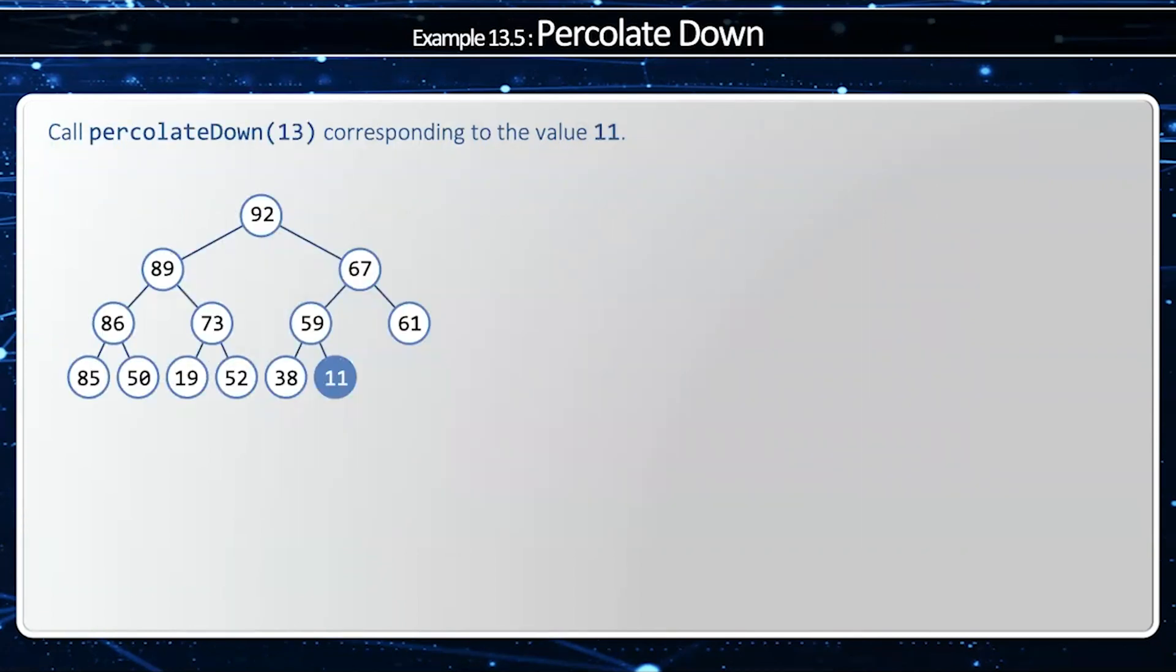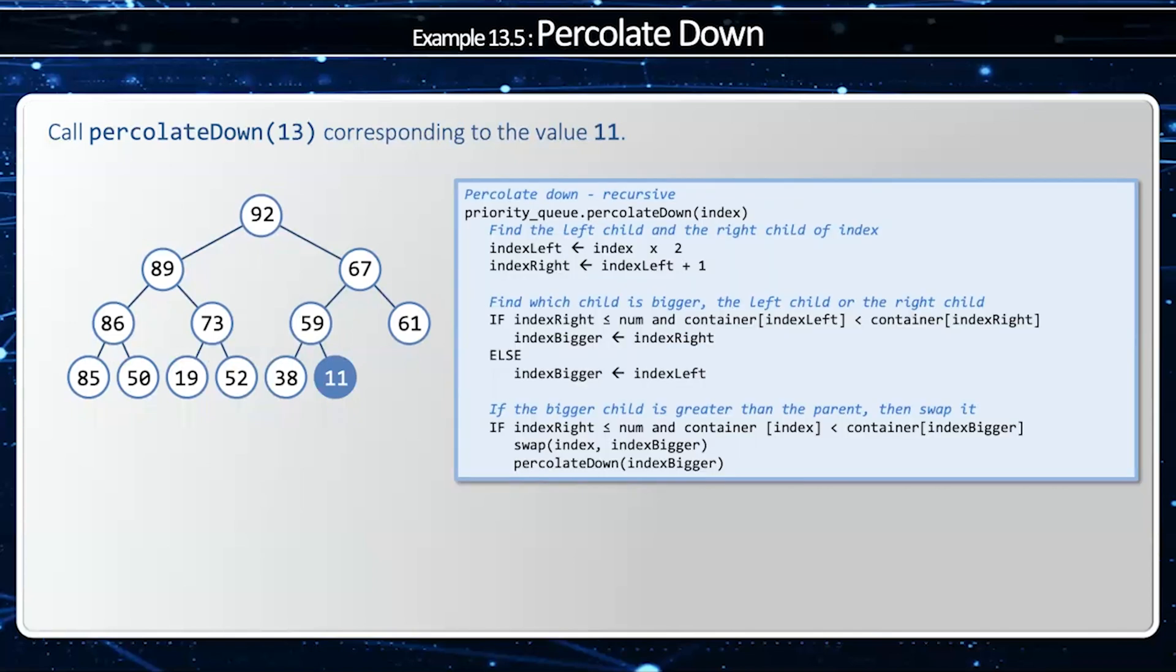Okay, to see how this works, take a look at this heap. Now, I want to call percolate down at index 13. To just remind myself what the algorithm is, I'm going to have my percolate down method to the right here. Now, index 13 corresponds to value 11. And to remind myself of that, I'm going to draw my indices down.